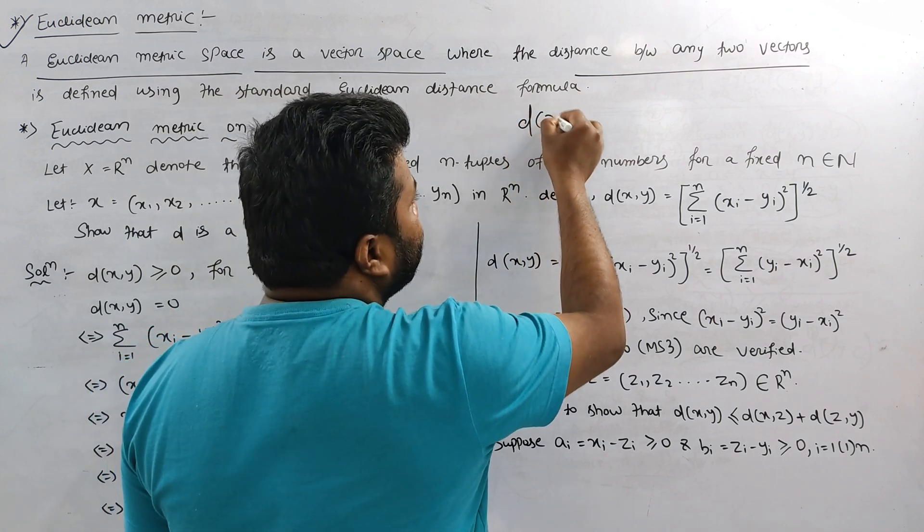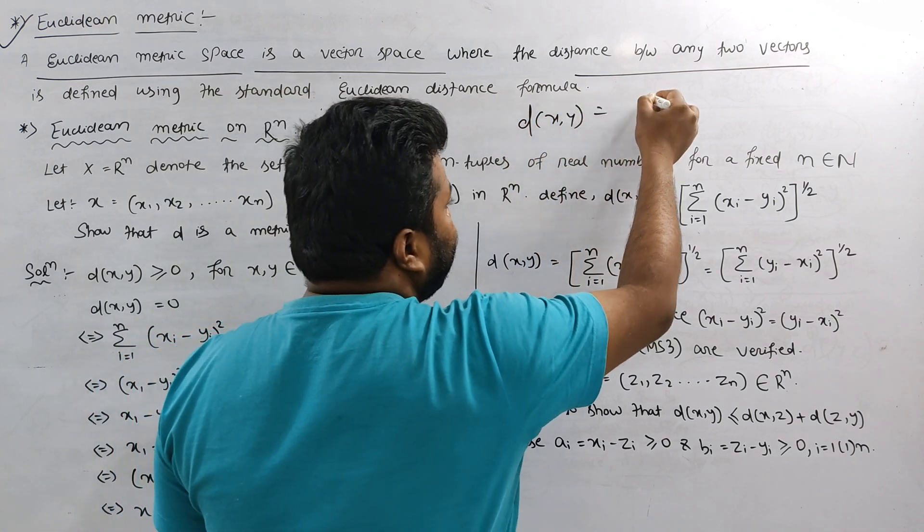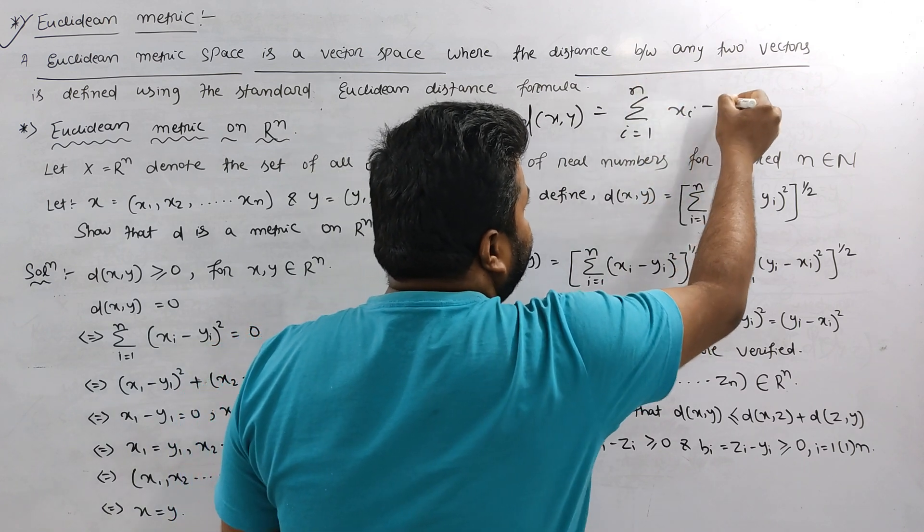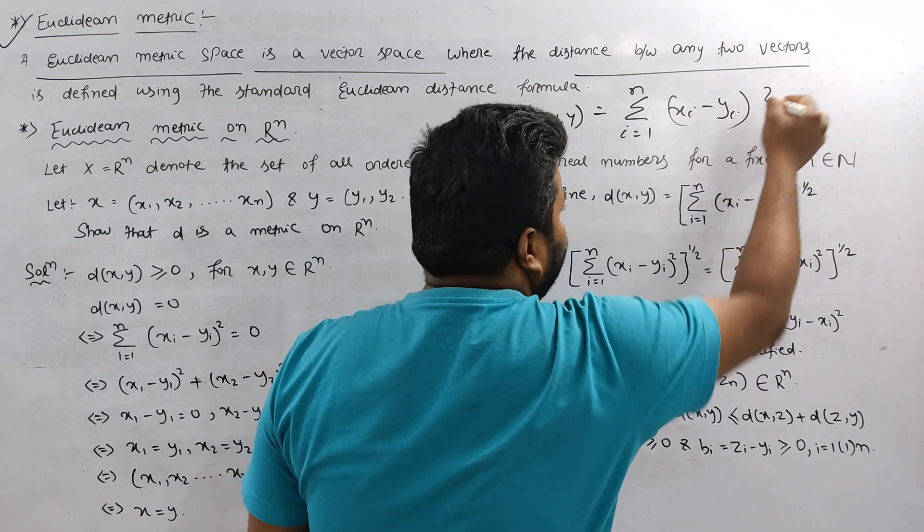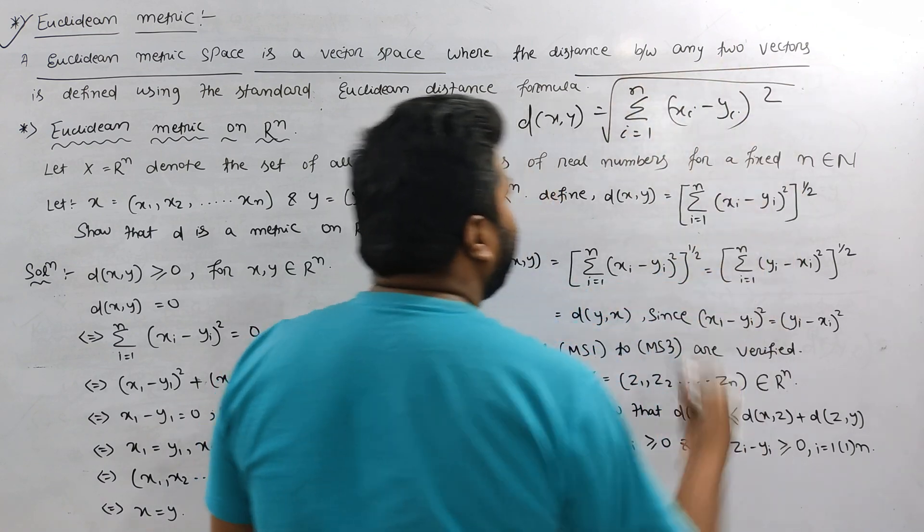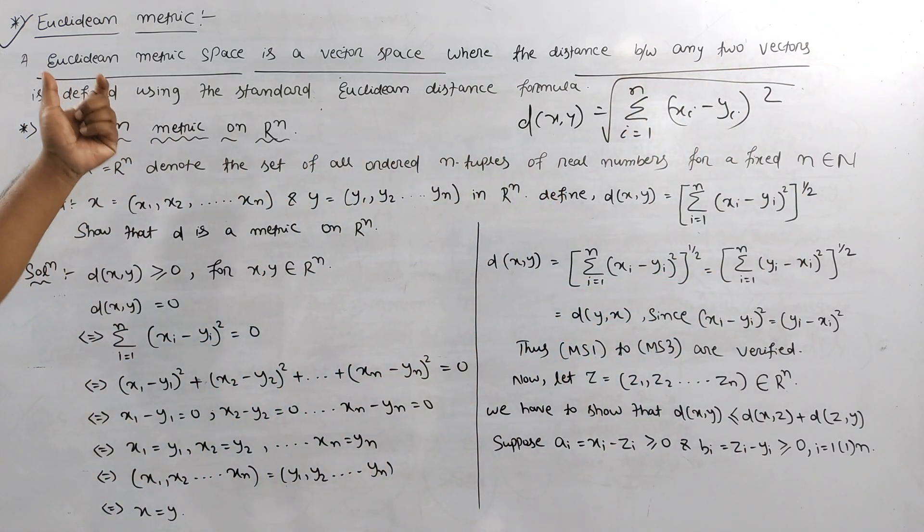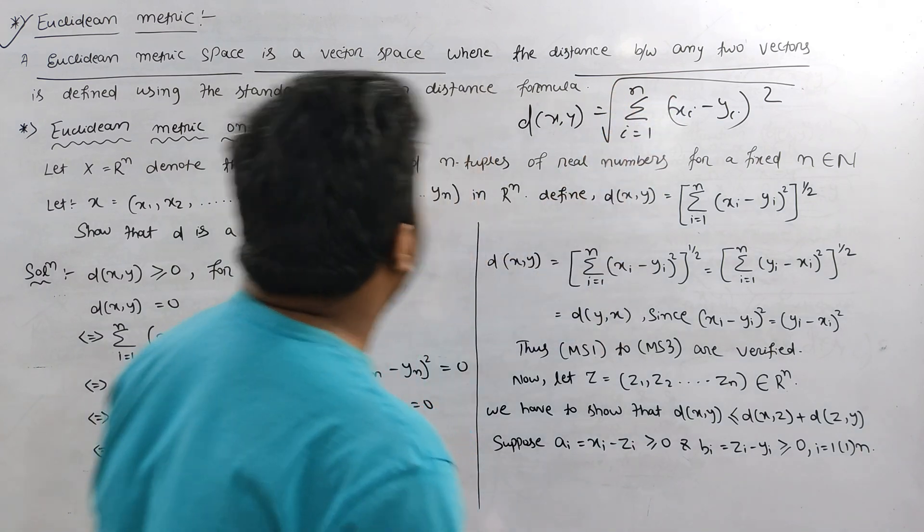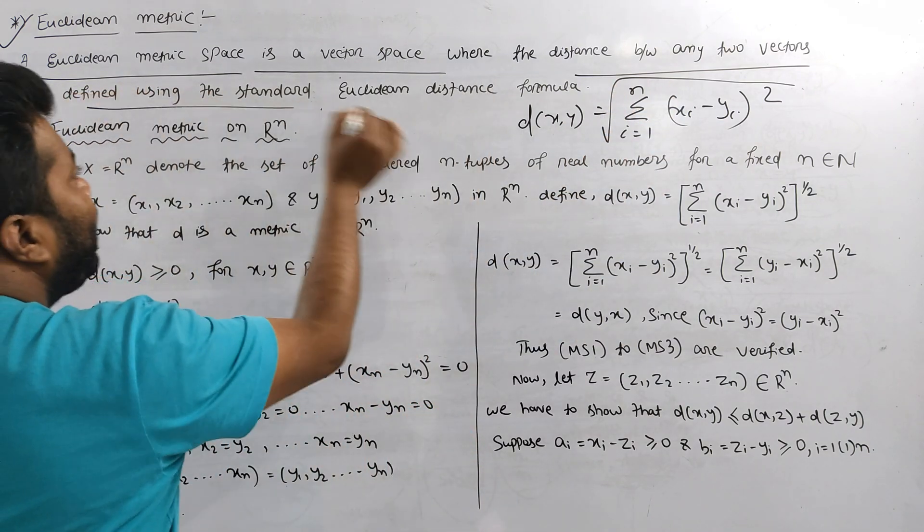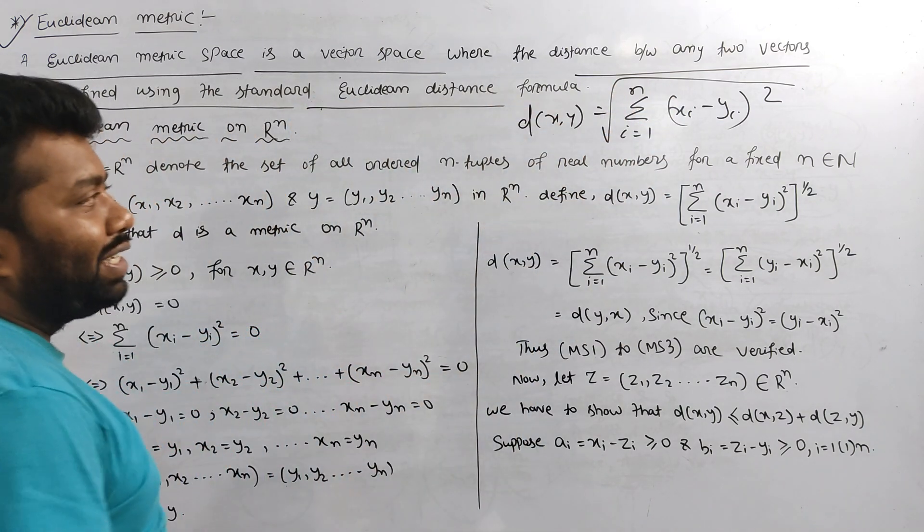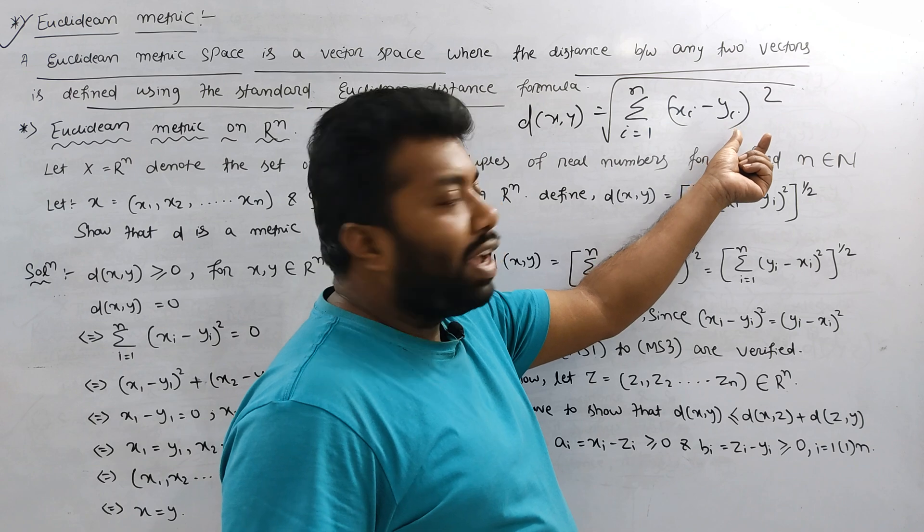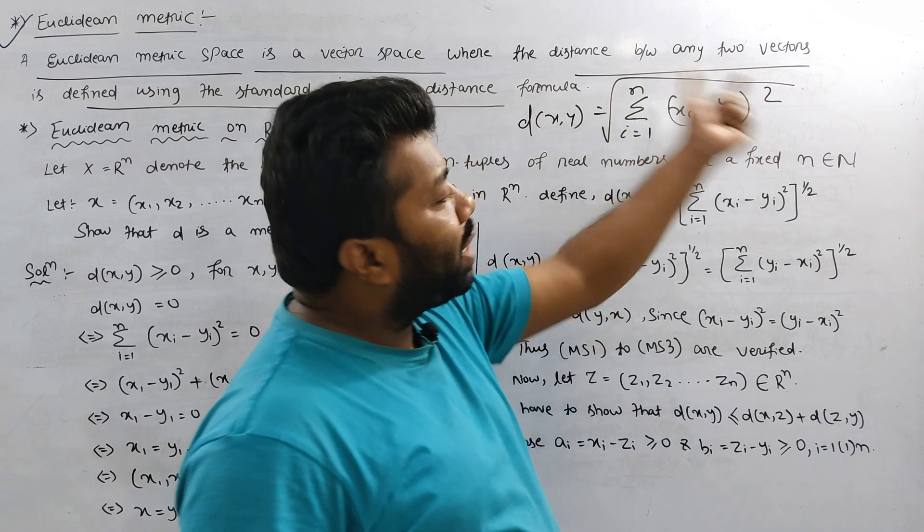I am going to represent Euclidean Metrics. d(x,y) is equal to summation i equals 1 to n, (x_i minus y_i)^2, whole square root over. What is Euclidean Metrics space? It is a vector space where the distance between any two vectors is defined by using the standard Euclidean distance.